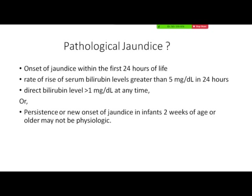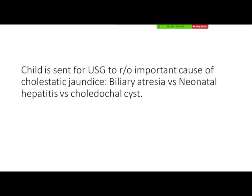The definition of pathological jaundice: when should jaundice be considered non-physiological? In the first 24 hours, a rise of bilirubin more than 5 mg in 24 hours. Direct bilirubin level more than 1 mg, or persistence of new onset jaundice even after 2 weeks. The neonate is sent to us for ultrasound to rule out important causes of cholestatic jaundice — biliary atresia, neonatal hepatitis, and choledochal cysts.